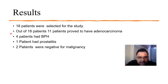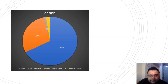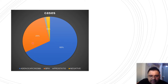Results: The study was conducted on 18 patients referred to the department of radio diagnosis with problems of difficulty in micturition. Of the 18 patients studied, 11 patients proved to have adenocarcinoma, 4 patients had BPH, 1 patient had prostatitis, and 2 patients were negative for malignancy. Among patients given PI-RADS 4-5, 68% proved to be adenocarcinoma, 29% had BPH, 1% had prostatitis, and 2% were negative.